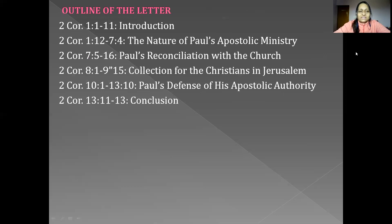The outline of second Corinthians is: chapter 1 verses 1 to 11 is the introduction; chapter 1 verse 12 to chapter 7 verse 14 covers the nature of Paul's apostolic ministry; chapter 7 verse 5 to 16 is Paul's reconciliation with the church; chapter 8 verse 1 to chapter 9 verse 15 is the collection for the Christians in Jerusalem; chapter 10 verse 1 to chapter 13 verse 10 is Paul's defense of his apostolic authority; and chapter 13 verses 11 to 13 is the conclusion. This is all from first and second Corinthians — I hope you have got a glimpse of what the letters are all about. We have completed chapter twenty-six and we'll meet soon with chapter twenty-seven. Thank you, God bless you.